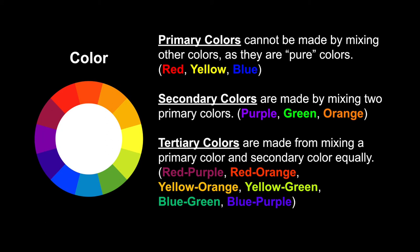Moving on to color, we have primary colors — red, yellow, and blue — which cannot be made by mixing any other colors together; they're pure colors. When you mix these together, you create secondary colors: purple, green, and orange. Mixing a primary and a secondary together gives you tertiary colors. For example, red and purple mixed 50-50 would just be called red-purple — we wouldn't call it maroon because that's not the exact color of maroon. Colors have really specific fancy names, but at 50-50 it is exactly what we're wanting to say.